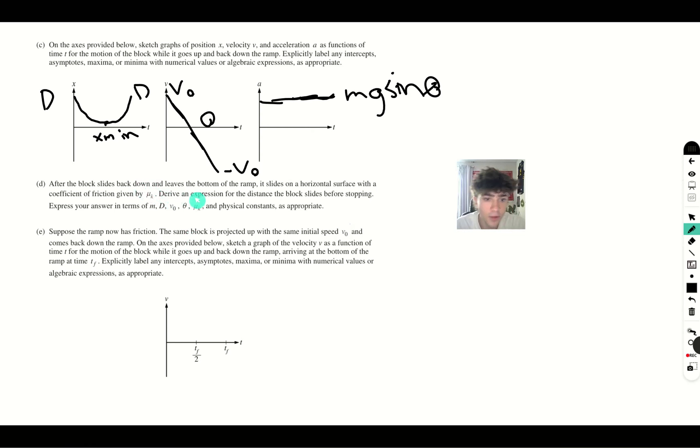So after the block slides back down and leaves the ramp, it slides on a horizontal surface with a coefficient of friction given by mu k. Derive an expression for the distance the block slides.